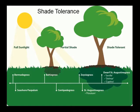Zoysia Grass is another good choice for partially shaded areas. Like St. Augustine Grass, it also does well in full sunlight. Generally, any cultivar of Zoysia Grass performs well in partial shade. Bahia Grass is not recommended for use in shaded conditions, but Centipede Grass tolerates some partial shade. Seashore Paspalum and Bermuda Grass do not do well in shaded situations.